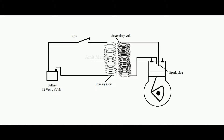In a step-up transformer, the number of turns in the primary coil is lesser than the number of turns in the secondary coil. The primary coil is connected to a battery — which could be 6 volt or 12 volt; generally in street cars a 12-volt battery is used — and there is a key K in the circuit.